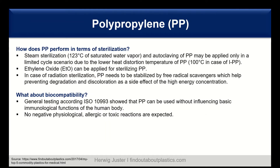How does polypropylene perform in terms of sterilization? Steam sterilization and autoclaving of polypropylene may be applied, but only in a limited cycle scenario due to its lower heat distortion temperature of around 100°C. Ethylene oxide can be applied for sterilization without any problem. When using radiation sterilization, PP needs to be stabilized by free radical scavengers — additives that prevent degradation and discoloration.